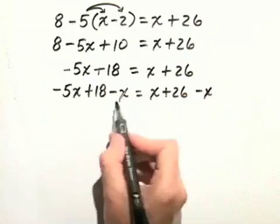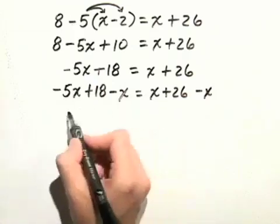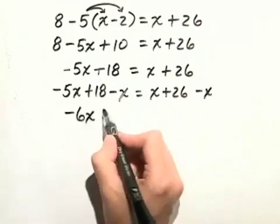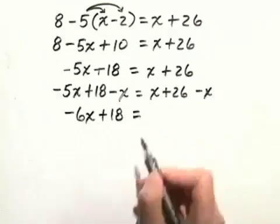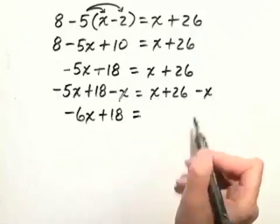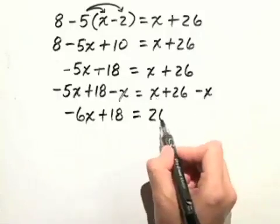On the left hand side, negative 5x minus x gives us negative 6x plus 18, equals the x minus x add to 0, and then we just have 26.